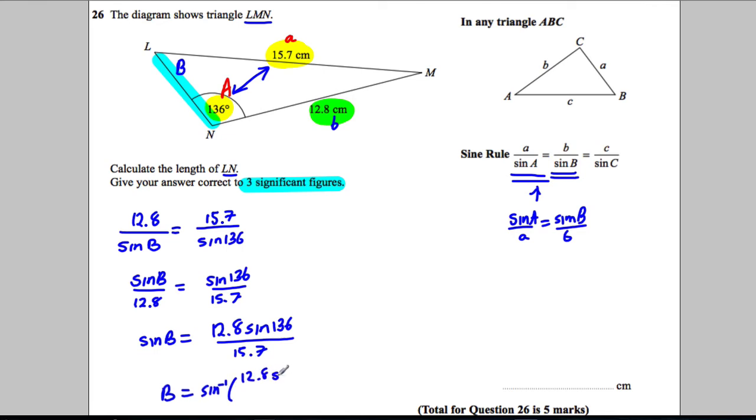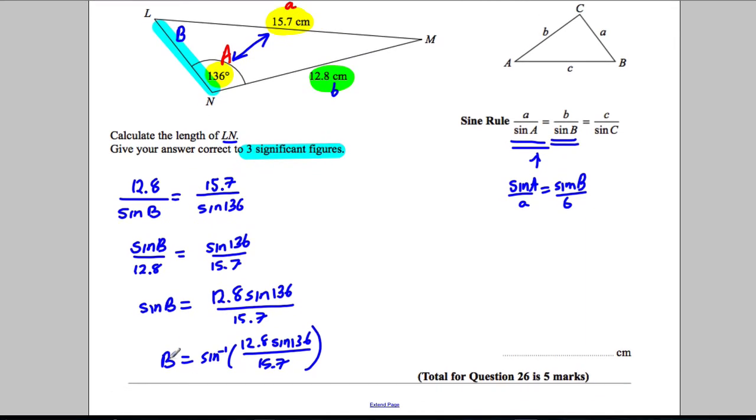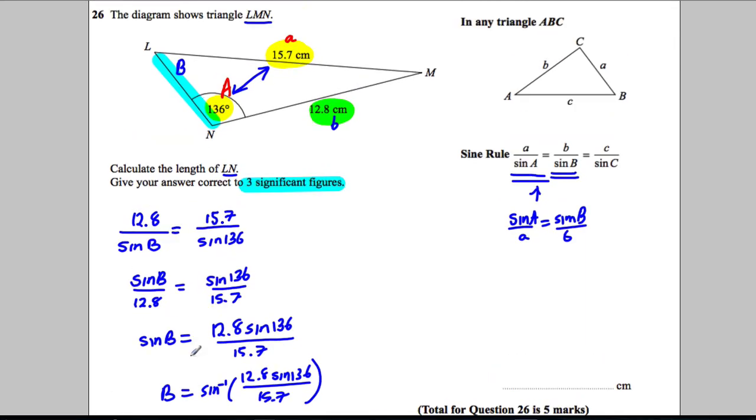So B is therefore the inverse sine of the following: 12.8 sine 136 over 15.7. Now I'm not going to work that out just yet, I'm just going to call that angle B.